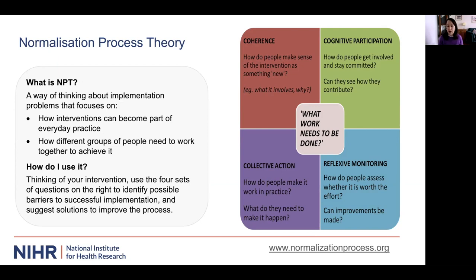Firstly, there needs to be coherence, so it has to make sense to all of those involved. Secondly, cognitive participation is key — this is about people being engaged and investing in the process of improvement. Thirdly, people need to act collectively; they need to act together, so they need to be able to do the necessary work to make it happen in practice, and we all know that interventions have unexpected effects that need to be managed as they happen.